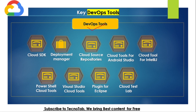DevOps means development and operations combined. The DevOps tools provided by Google Cloud Platform reduce repetitive and manual tasks by automating them. GCP provides tools that integrate with IDEs, as well as deployment manager tools like Google Stack and Deployment Manager to automate manual work.